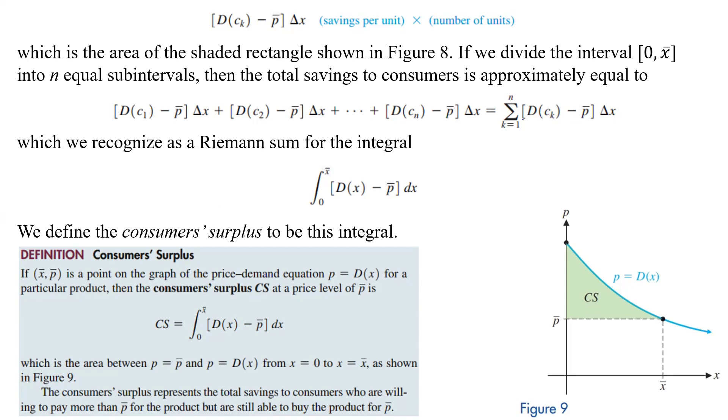Now, if we remember our Riemann sums from a little bit ago, we know that then that's going to be from 0 to X bar of D of X minus P bar DX, and that's going to be called the consumer surplus.